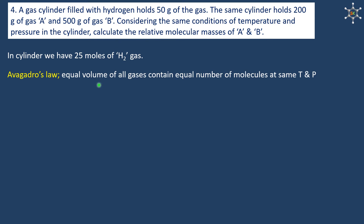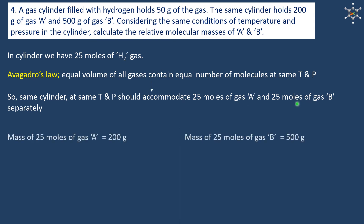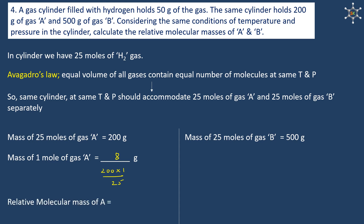By Avogadro's law, equal volumes of all gases contain equal numbers of molecules at the same temperature and pressure. So the same cylinder at the same conditions accommodates 25 moles of gas A and 25 moles of gas B separately. The mass of 25 moles of gas A is 200 grams, so the mass of 1 mole of gas A is 200 divided by 25, which is 8 grams. The relative molecular mass of A is 8 grams.